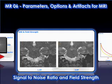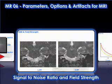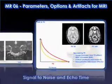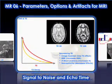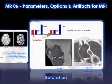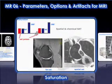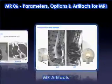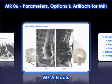Part 6, Parameters, Options, and Artifacts for MRI, explains the principles of signal-to-noise ratio in MRI and how image quality is affected by signal-to-noise. This module goes on to describe the acquisition of MR signal and the various artifacts in MRI.